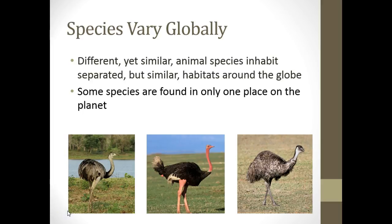Here's an example of species varying globally. Different yet similar animal species inhabited separated but similar habitats around the globe. Some species are found only in one place on the planet. We have three land-dwelling birds in three different places around the earth — more specifically, three different continents. This is an example of species vary globally.